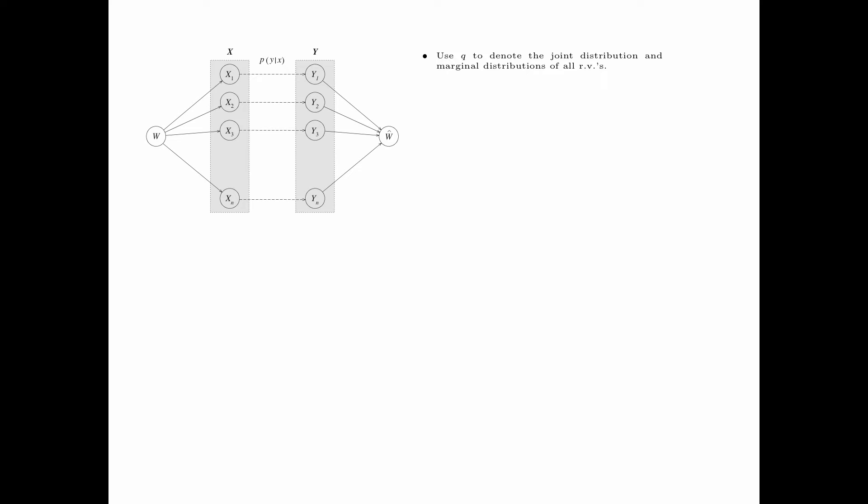We continue to use q to denote the joint and marginal distributions of all random variables. More precisely, for all quadruples (W, X, Y, Ŵ) such that q(X) > 0 and q(Y) > 0, we have the factorization q(W, X, Y, Ŵ) = q(W) · ∏(i=1 to n) q(Xi|W) · ∏(i=1 to n) p(Yi|Xi) · q(Ŵ|Y). There is a one-to-one correspondence between the dependency graph and this factorization of the joint distribution q.